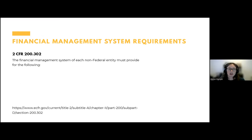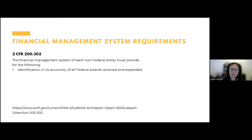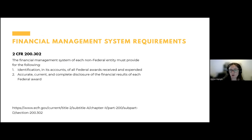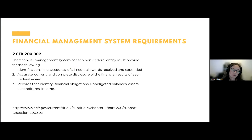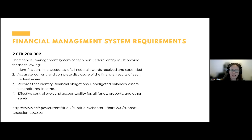Today I am specifically focusing on the requirements outlined in 2 CFR 200, which covers financial management requirements for all federal awards. Section 2 CFR 200.302 states that the financial management system of each non-federal entity must provide for: identification in its accounts of all federal awards received and expended; accurate, current, and complete disclosure of financial results of each federal award; records that identify financial obligations, unobligated balances, assets, expenditures, income; and effective control over and accountability for all funds, property, and other assets.